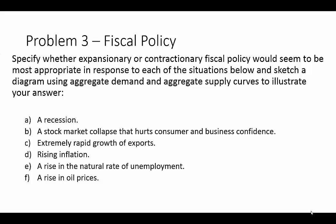Problem three covers fiscal policy. We need to specify whether expansionary or contractionary fiscal policy is most appropriate for each situation, and then sketch an aggregate demand and aggregate supply diagram to illustrate the policy. Starting with scenario A — a recession: we need to get the economy going, so that calls for expansionary fiscal policy. With expansionary fiscal policy, the government taxes less than it spends, introduces a lot of spending, runs a deficit, taxes a little less, everybody holds on to their money, and we create demand in the market.